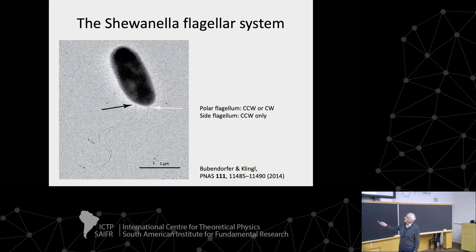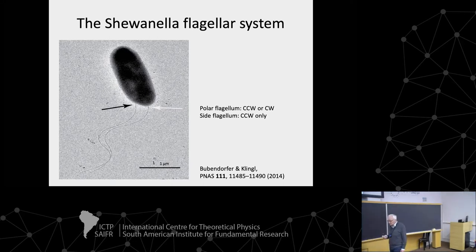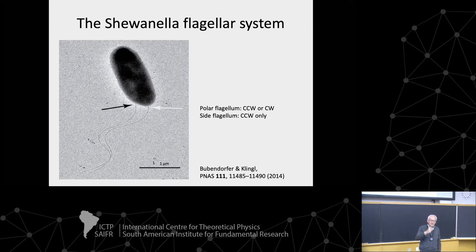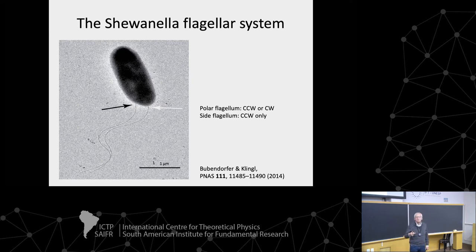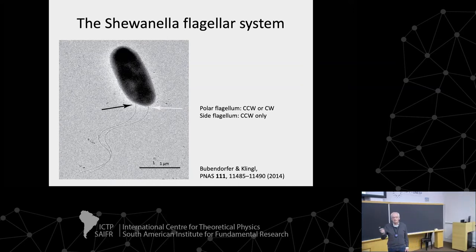Shewanella typically has one flagellum at the pole and one off the side. The lateral one is removed so you get it down to one flagellum. That polar flagellum has a motor that can turn both ways. Because it has a single flagellum, it would like to be able to move forward and backward. To do that, you need a helix of fixed sense of orientation — think of a corkscrew-type motion: rotate one way you move forward, rotate the other way you move backward.